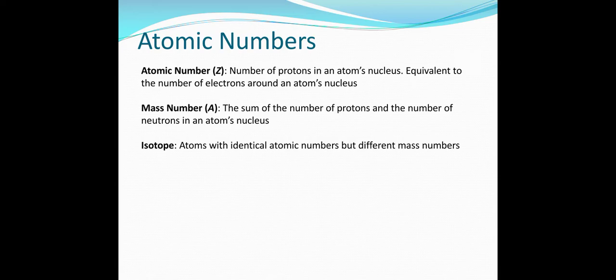The atomic number is the number of protons in an atom's nucleus, and it equals the number of electrons around the nucleus. The mass number is the sum of protons and neutrons in the nucleus. Isotopes are atoms with identical atomic numbers but different mass numbers — meaning they have the same number of protons but different numbers of neutrons.